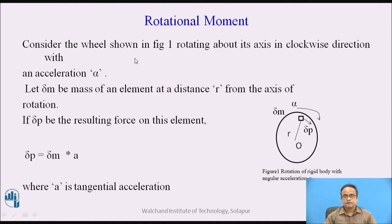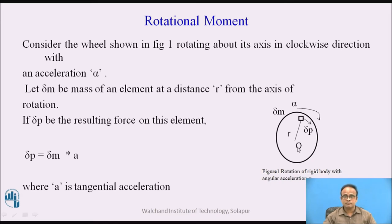Let us consider a wheel shown in this figure, which is rotating about its axis in a clockwise direction with an acceleration alpha. This wheel has an axis of rotation through point O, and the angular acceleration with which it rotates is alpha. Let delta m be the mass element at a distance r from the axis of rotation, and let delta p be the resulting force acting on this element.